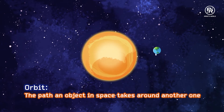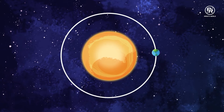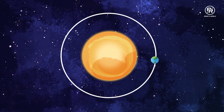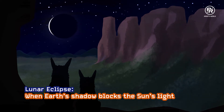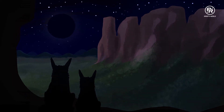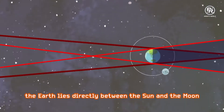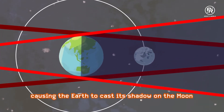Orbit simply refers to the path that an object in space takes around another one. What does this have to do with the eclipse? Well, during a total lunar eclipse, the Earth lies directly between the Sun and the Moon.